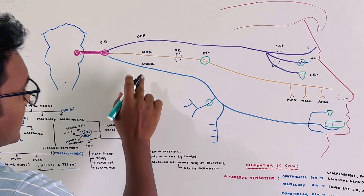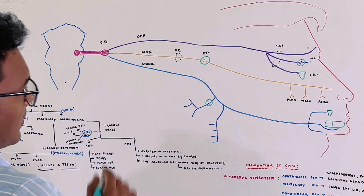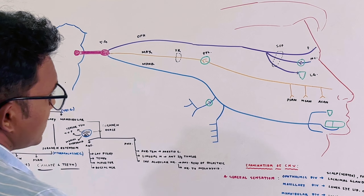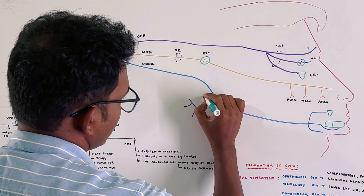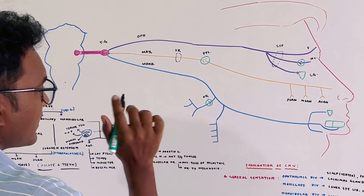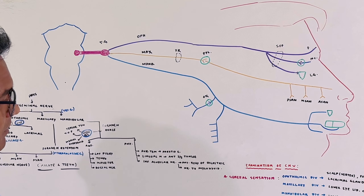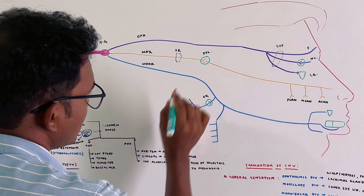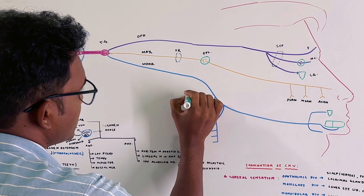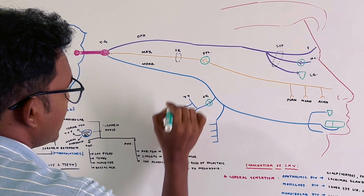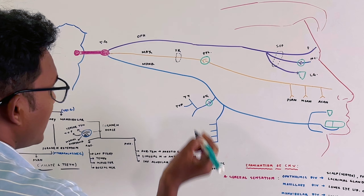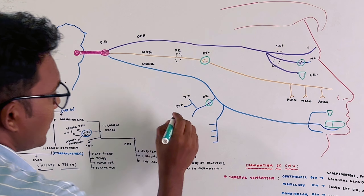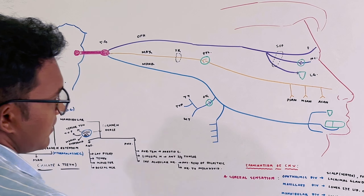The third division is the mandibular division, which forms the otic ganglion. From the otic ganglion, three branches are supplied: it supplies the tensor tympani muscle, the tensor veli palatini muscle, and the medial pterygoid muscle.